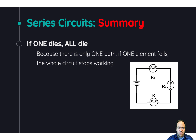If one thing in a series circuit dies, the entire circuit dies. Looking at the circuit image: if one bulb were to break, that opens the circuit, charge can't flow, and the remaining bulbs won't work. The same happens if any other bulb breaks — you need a complete circuit for charge to flow. If one element breaks, the entire circuit breaks as well.